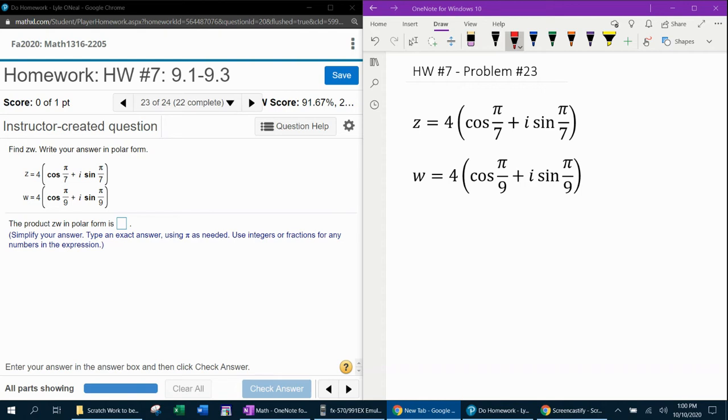It says find ZW, that means Z times W, write your answer in polar form. These complex numbers are already in polar form, so when we find the product Z times W, we're just going to leave that answer in polar form. It does say to type an exact answer using pi as needed, and so that means that no decimal approximations are allowed.